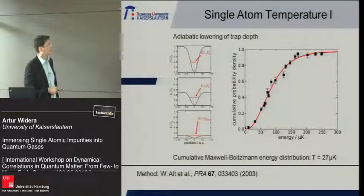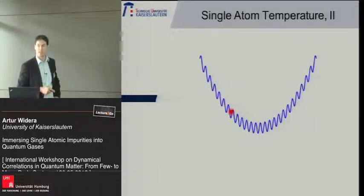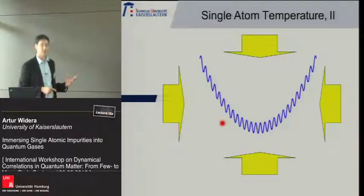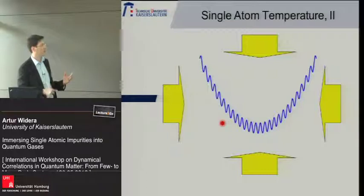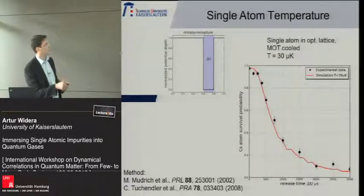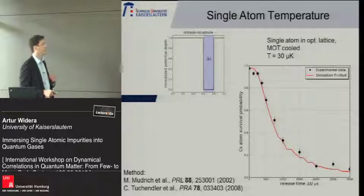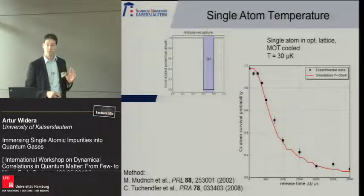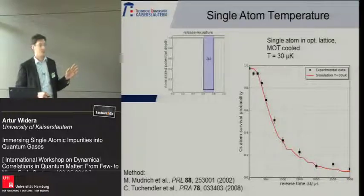We have a different method to determine kinetic energy: the release-recapture method. We switch off the trap, let the system evolve for a certain time, then check if the atom escaped our trap volume or not. Doing this for various release times and looking at the survival probability versus release time, with numerical simulations we assign a temperature of 30 microkelvin. This method was pioneered in Matthias Weidemüller's group and also in Philippe Grangier's group at Palaiseau.